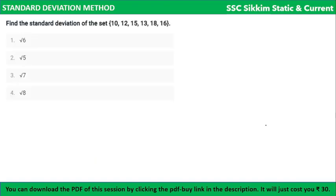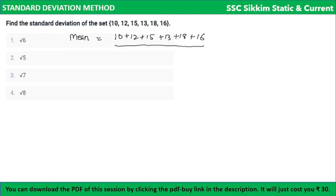Now let us practice with a question. Given data set: 10, 12, 15, 13, 18, 16 — find the standard deviation. First, calculate the mean: 10 + 12 + 15 + 13 + 18 + 16. There are 6 terms, so divide by 6. Summing: 10+12=22, 22+15=37, 37+13=50, 50+18=68, 68+16=84. So 84 divided by 6 equals 14. The mean is 14.